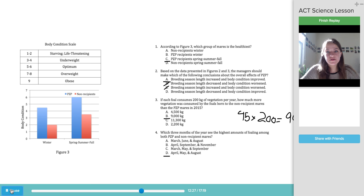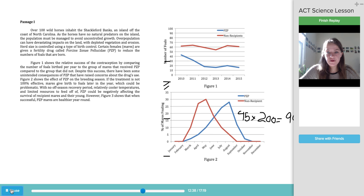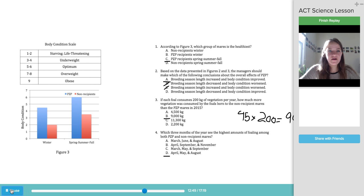You can also just verify that and check the other months. So a bunch of these do have overlaps with April and August and May. But September and November are addressed a couple of times. And if you look at figure two, September and November are very low. September is reasonably high for PZP, but there's absolutely no foals in the non-recipients. So now we're ready to move on to the final question.